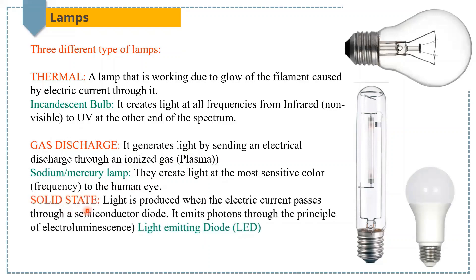The third one is solid state. In such lamp, light is produced when the electric current passes through a semiconductor diode. It emits photons through the principle of electroluminescence. For example, light-emitting diode.